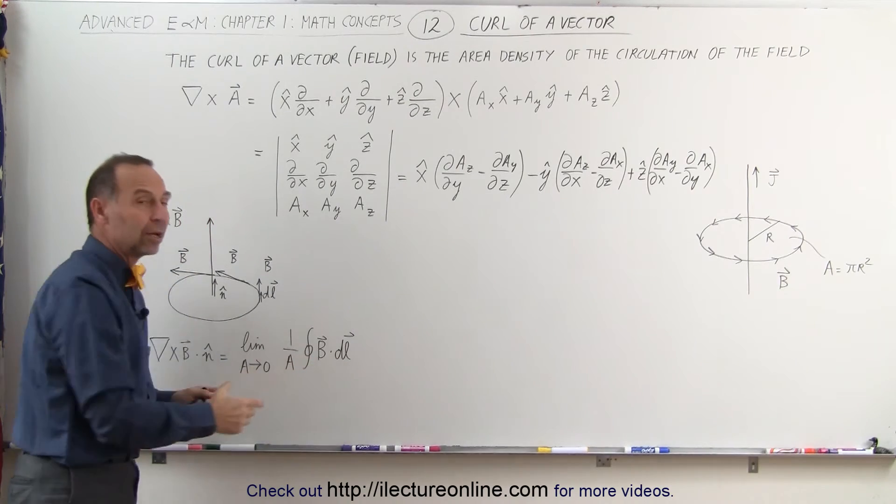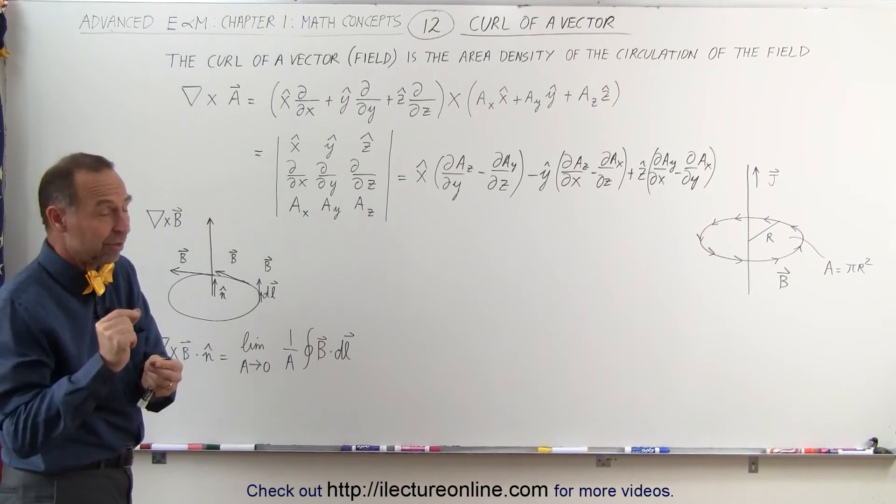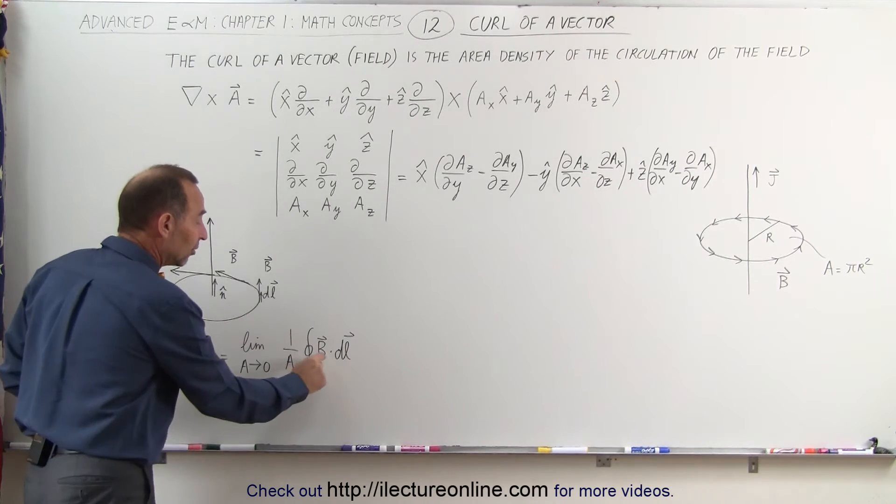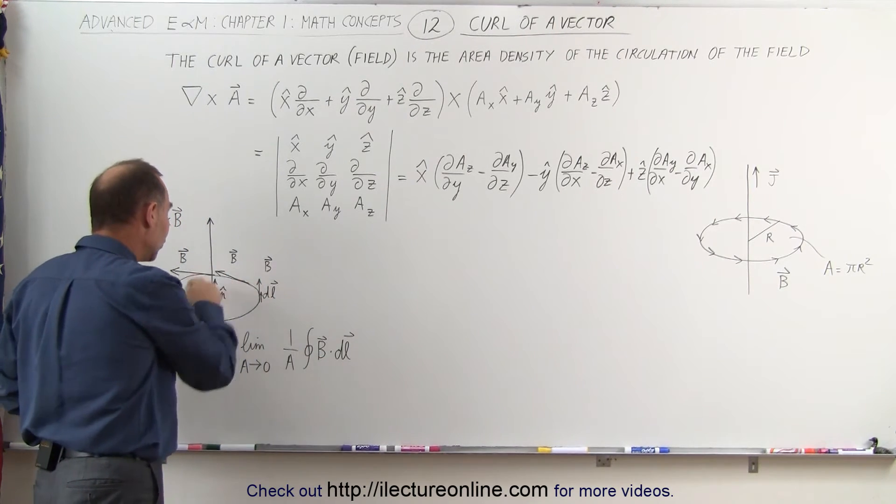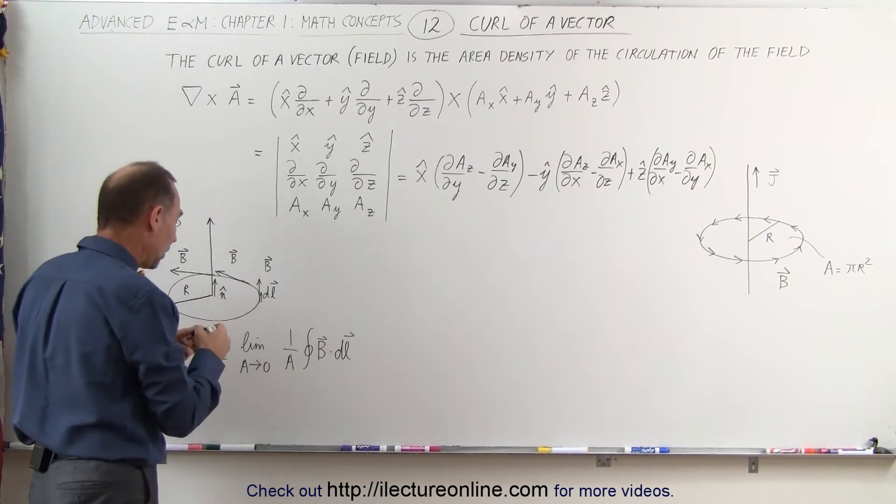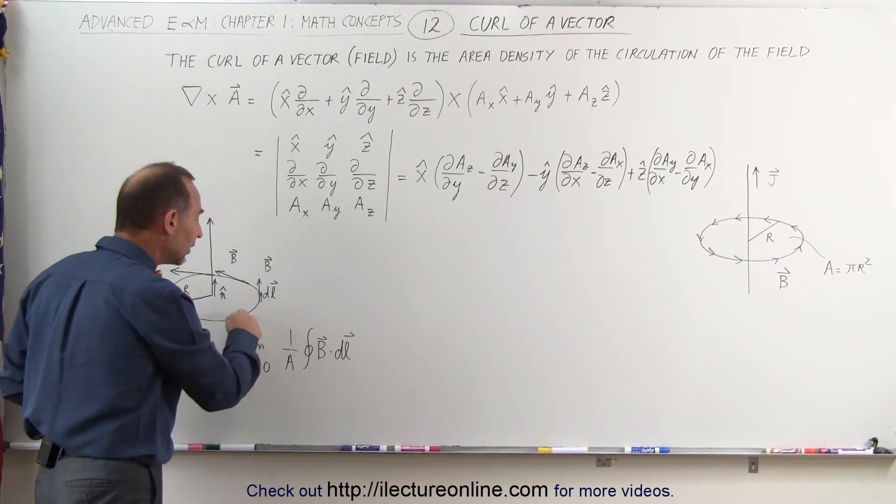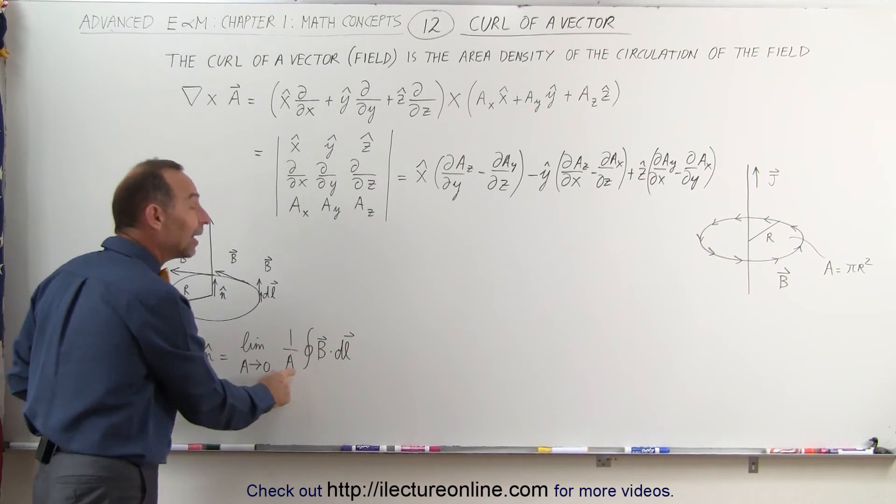So when we do the dot product, we don't have to worry about multiplying times the cosine of the angle because the angle will be 0. Cosine of 0 is 1. So simply the strength of the magnetic field at the distance R away from this circle here, so at the distance R away, we can say that this is equal to the strength of the field times the length divided by the area.